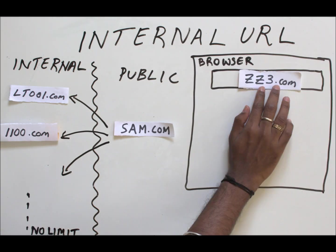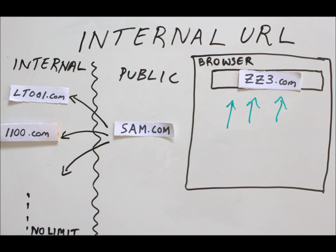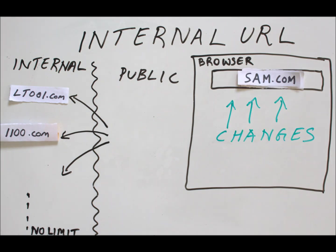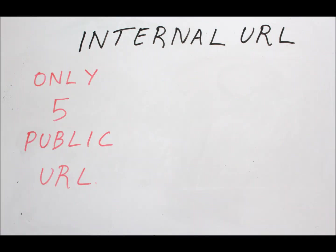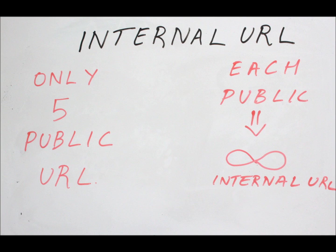Please note that there can be an infinite number of internal URLs mapped to one particular public URL. When you go ahead and type in the internal URL in the browser, it automatically changes to the corresponding public URL. As you can see, there is a maximum limit of five public URLs, but each of the public URLs can have infinite internal URLs.